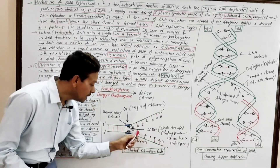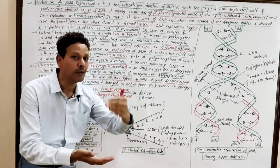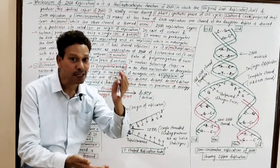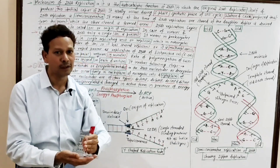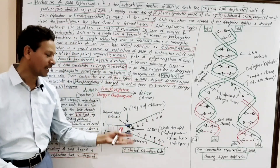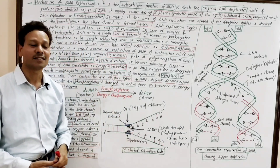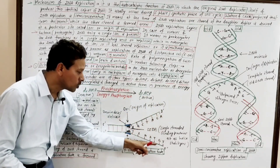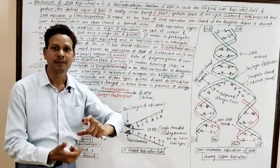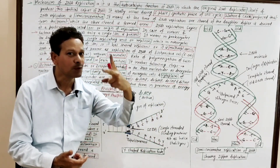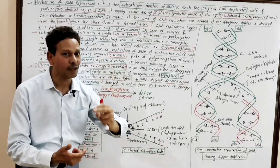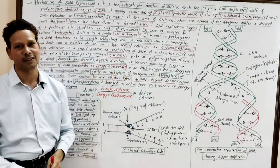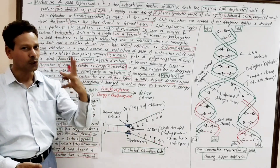The topoisomerase enzyme makes a nick — a cut — and reseals the DNA strands. As a result, the DNA becomes Y-shaped, and this Y-shaped structure is called the replication fork.